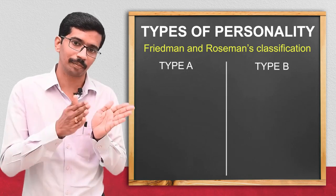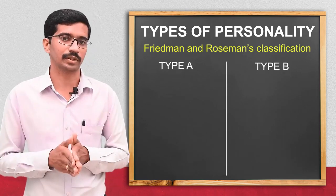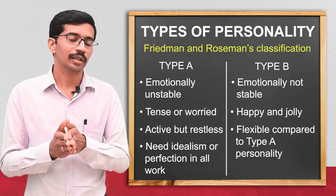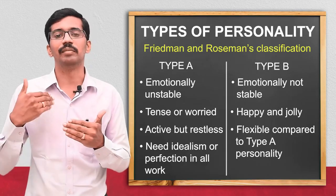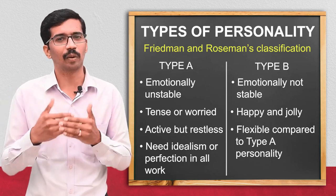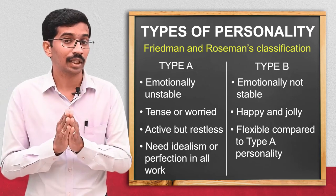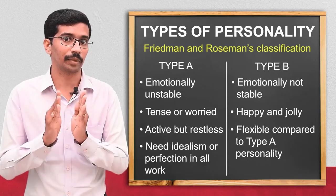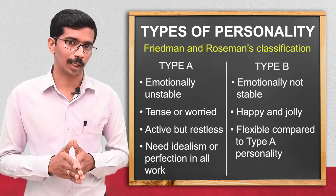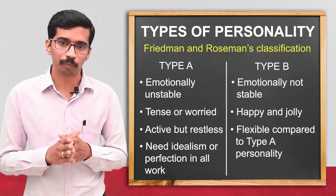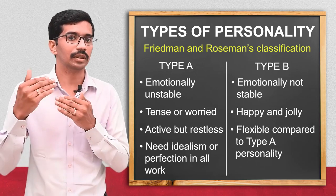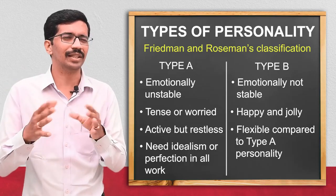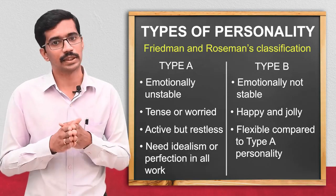There is one more classification given by Friedman and Rosenman. They classified personality into Type A and Type B. Type A people are emotionally unstable — very tense or worried, very active but restless, and always expecting idealism and perfection; they are perfectionists. Type B people are more emotionally stable, maintaining happiness and jolliness, and are a little bit flexible compared to Type A personality.